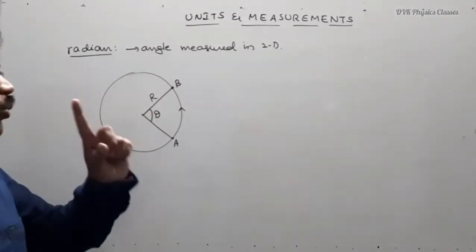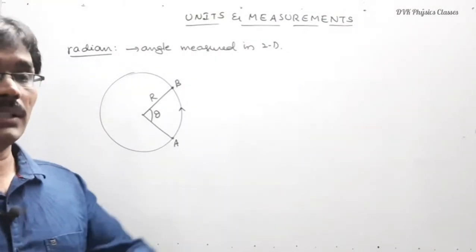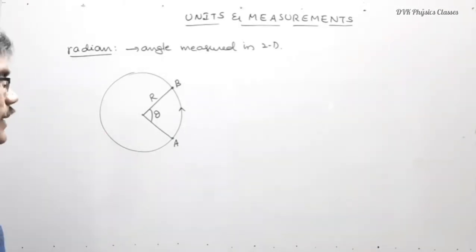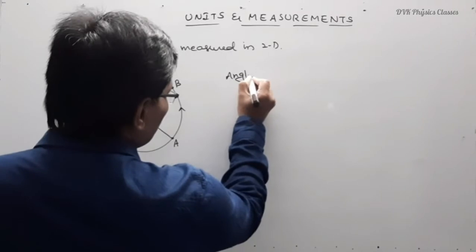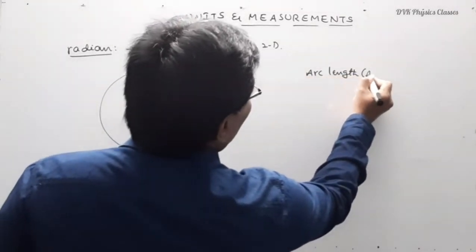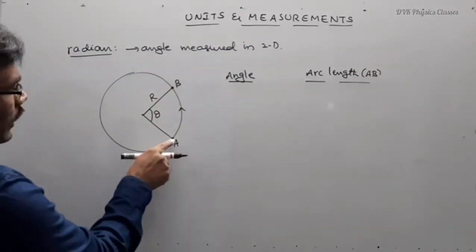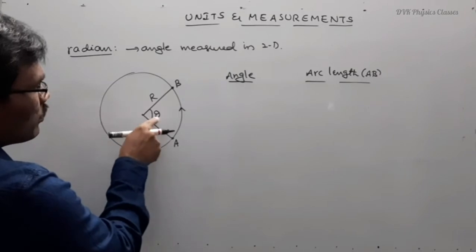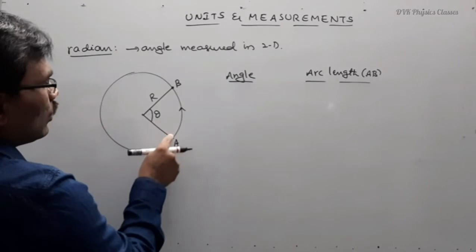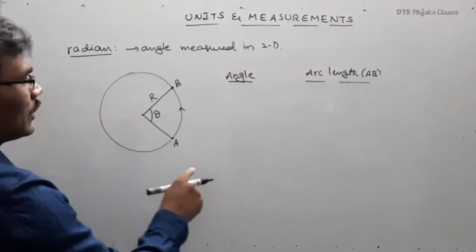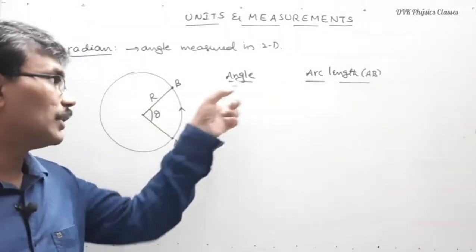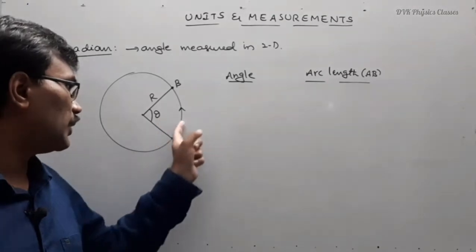So how do you define one radian? When do you say that the object has made one radian of angular displacement? When the particle has gone from A to B, it has made an angular displacement of theta. At the same time, this is the linear distance traveled by the particle from A to B, that is called arc length. The linear distance traveled by the particle to cause an angular displacement is called arc length.